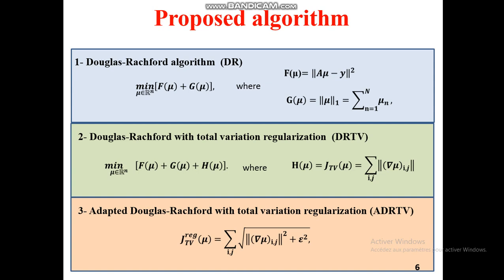We add H of mu to the first equation. The third algorithm, proposed in our work, is an adapted Douglas-Rachford with total variation regularization, ADRTV, given by this formula.